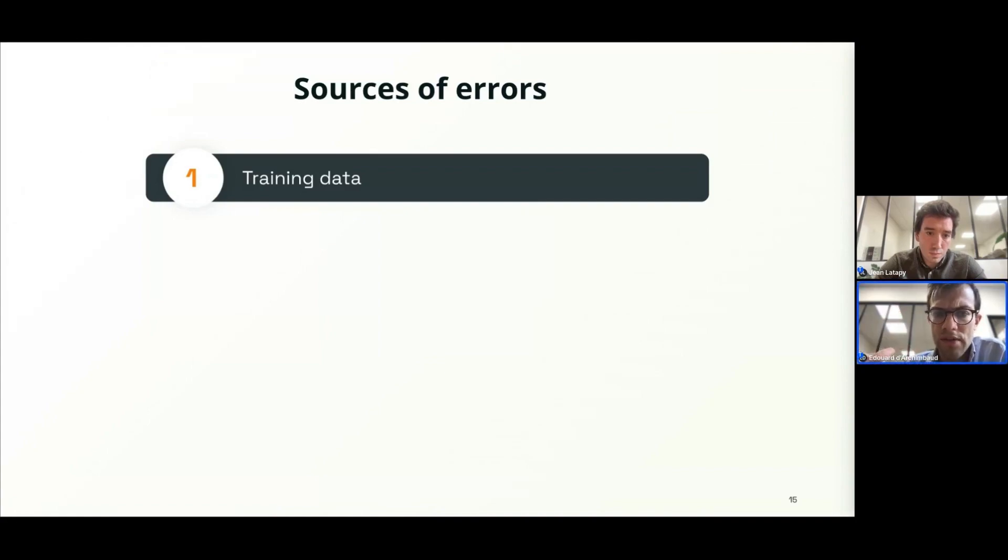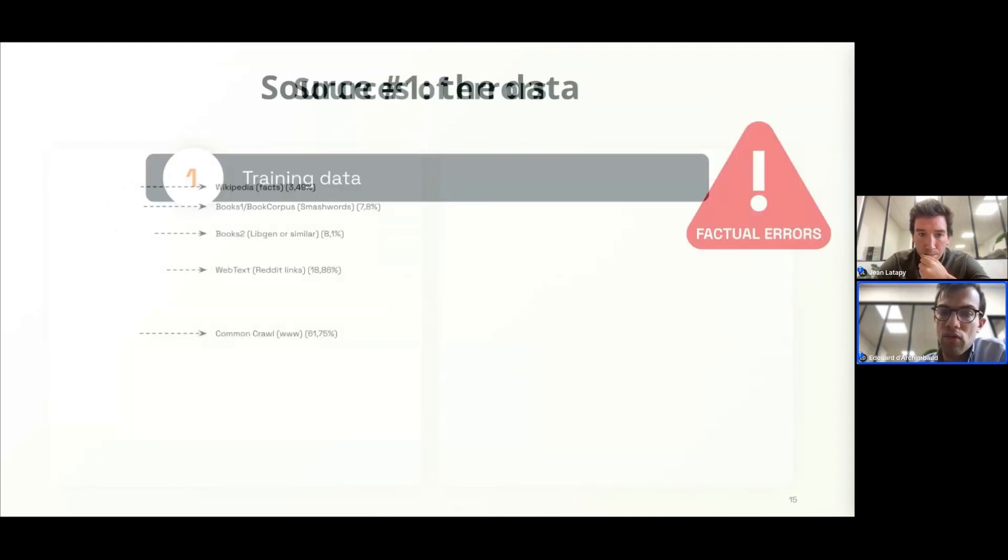And those errors are transmitted directly to the model and propagated to the model. And then the model leaks those incorrect information and generates unreliable responses. To give you just one example.